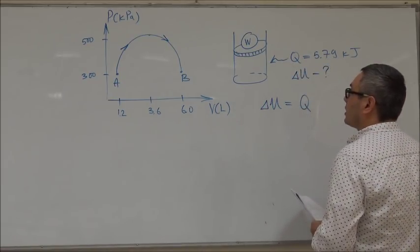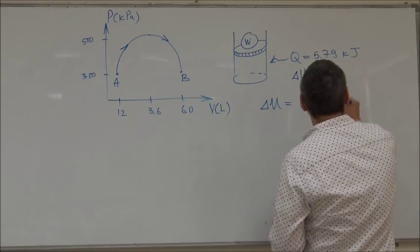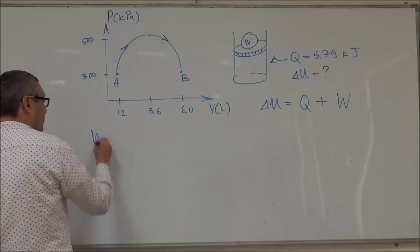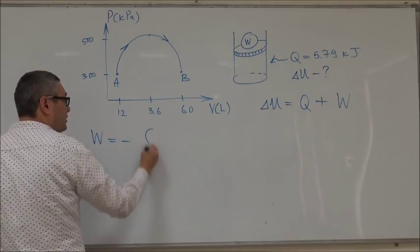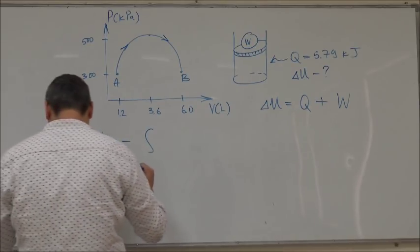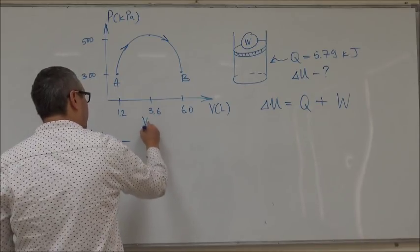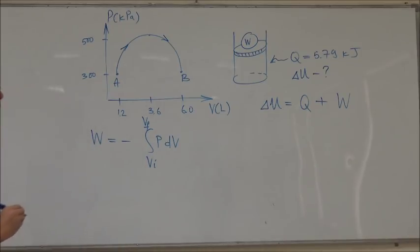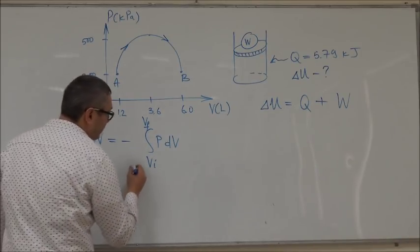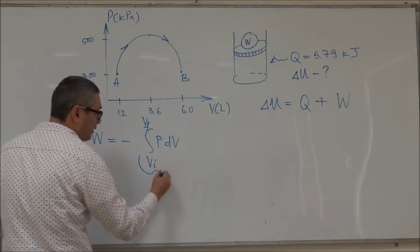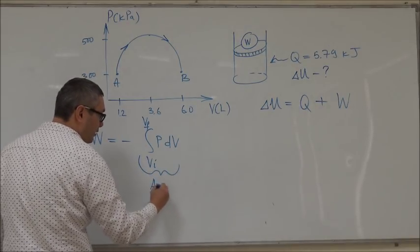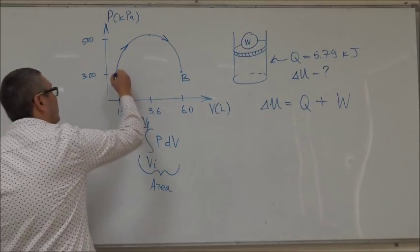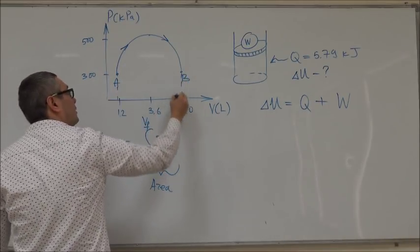The work in general is equal to the negative of the integral from the initial to the final of pressure dV. But geometrically this integral is actually the area under the curve, so in this case it is this area.